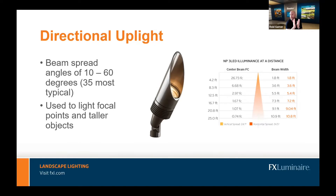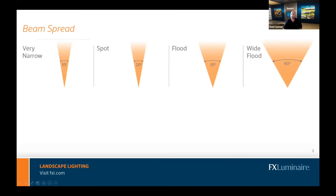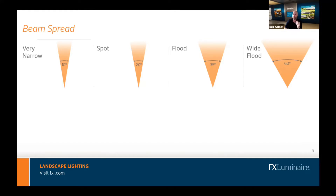A directional uplight has a focused beam spread. There are industry terms for the different beam spreads: a 35-degree beam spread is called a flood — the most common. Moving to more narrow, we have a spot at about 20 degrees, and then very narrow at 10 degrees. Then there's a wide flood at 60 degrees. Depending on what you're lighting and how wide the object is, you'll choose the appropriate beam spread.